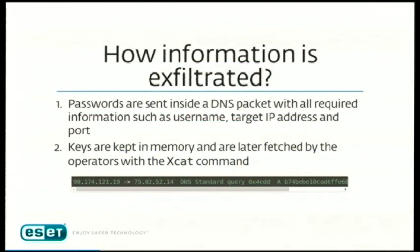How are credentials exfiltrated? Via DNS packets containing username, target IP address, and port, encrypted with RSA so you cannot read or tamper with them. Since keys are too large for DNS, they are stored in shared memory on the server and fetched later using the xcat command — a new command added to the SSH protocol by the backdoor. Interestingly, if a tcpdump is running in promiscuous mode on the server, it will stop sending leaked credentials — a self-aware behavior to trick system administrators.